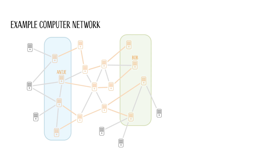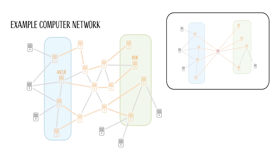The computers of Antje, Bob, and their friends are not the only important ones. We must not forget that other computers in the network can also fail and may be connected in an inconvenient way. For example, it could be that all data sent between Antje's and Bob's groups of friends has to pass through a single computer. If this computer fails, there can no longer be a connection between the two groups.